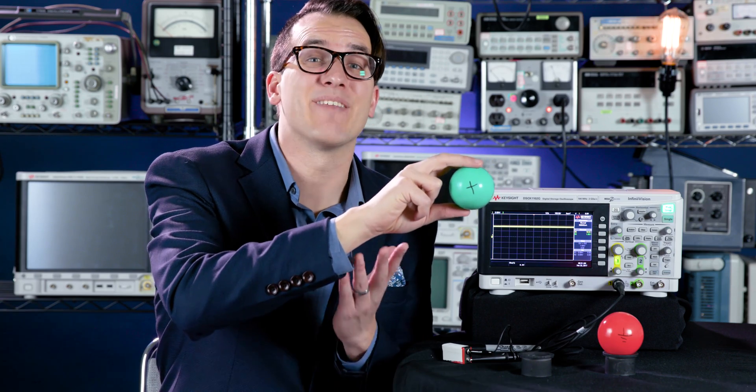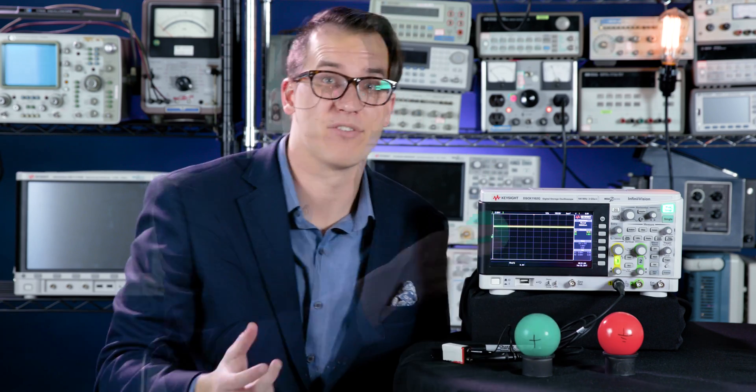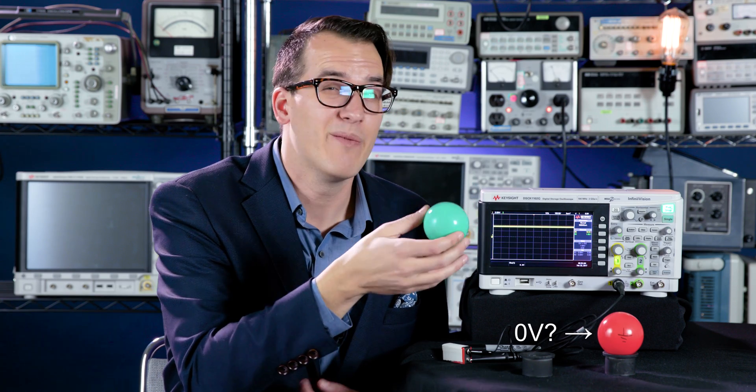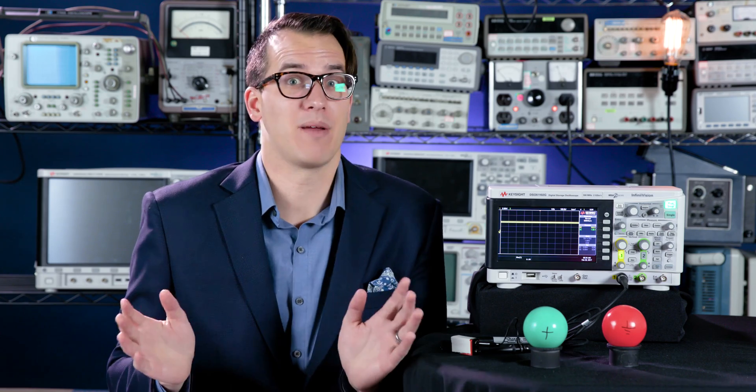When it comes to electricity, instead of height, we have electrical potential energy levels. Typically we measure with respect to ground, which we consider to be zero volts. Whether or not that's actually true is another discussion. Ground, or zero volts, used to be, and sometimes still is, a metal rod hammered into the ground.